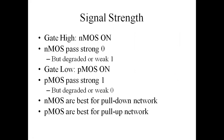Regarding signal strength: when we apply gate high, NMOS becomes on, and when we apply gate low, PMOS becomes on. NMOS passes strong zero but degraded one, while PMOS passes strong one but degraded zero. Generally, we use NMOS networks for the pull-down network and PMOS transistors for pull-up networks. These are the basic things we use when implementing circuits with CMOS.